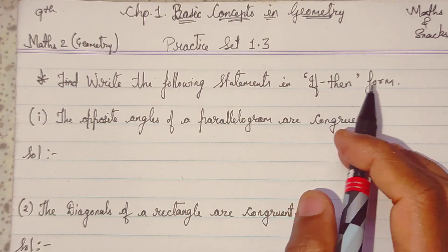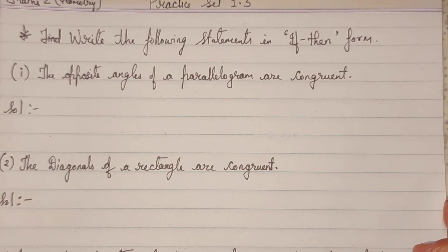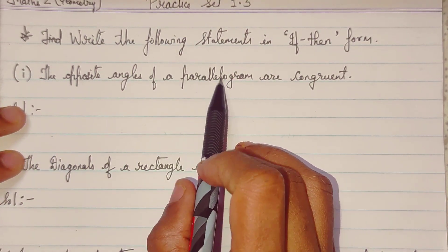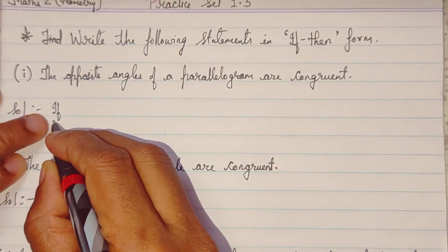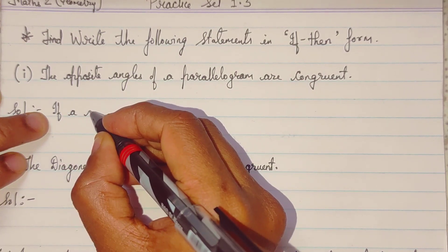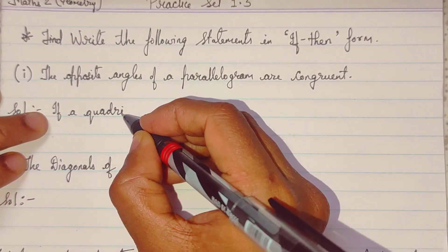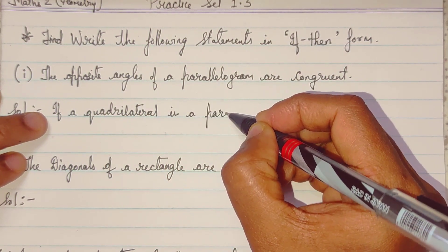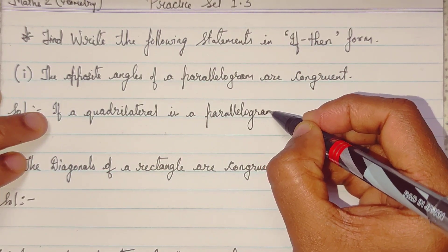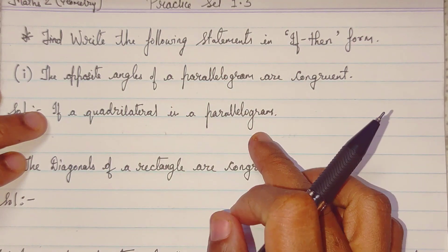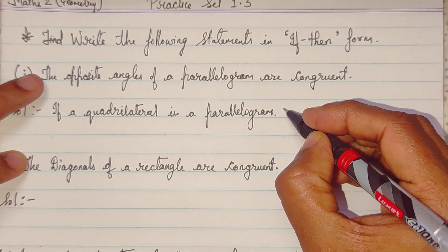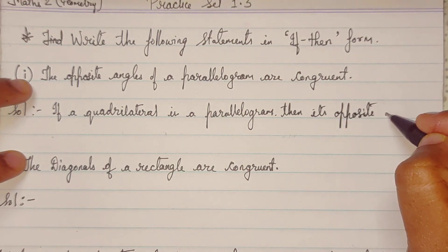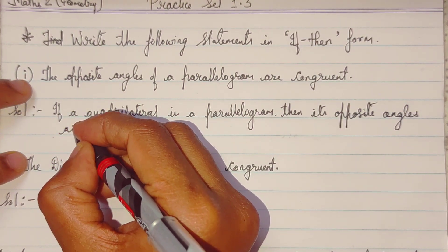Write the following statements in if-then form. First one: 'The opposite angles of a parallelogram are congruent.' Here we are talking about a parallelogram. So in if-then form: if a quadrilateral is a parallelogram, then the opposite angles are congruent.